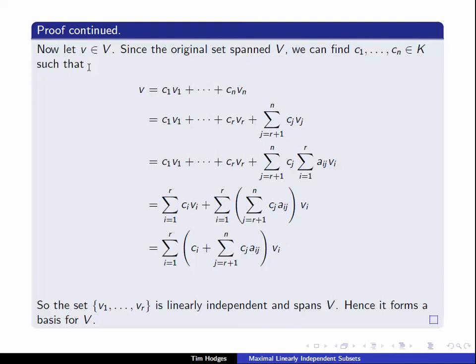So what have we done? We've shown that given our hypothesis, any element of V can be written as a linear combination of V1 up to Vr. So the set V1 up to Vr is linearly independent by hypothesis. We assumed it was a maximal linearly independent set. And it spans the vector space. So that's exactly the definition of a basis. So we've shown that any maximal linearly independent subset of a spanning set is a basis of that vector space.